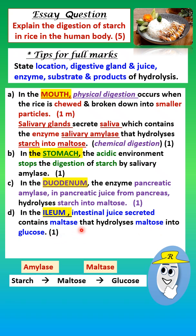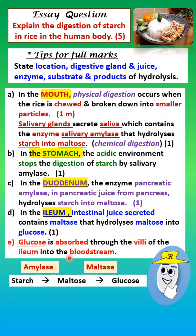Take note that starch is first hydrolyzed into maltose by amylase, and then maltose is hydrolyzed into glucose by maltase. As an extra point, glucose is absorbed through the villi of the ileum into the bloodstream.